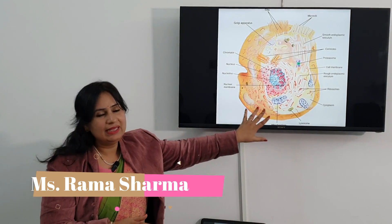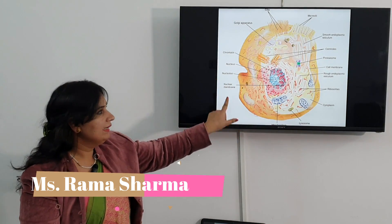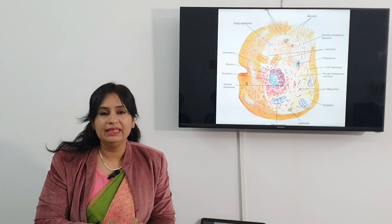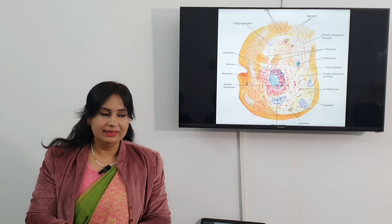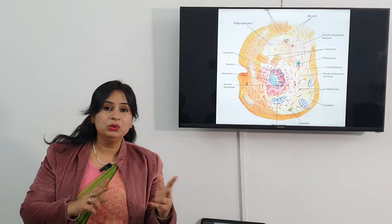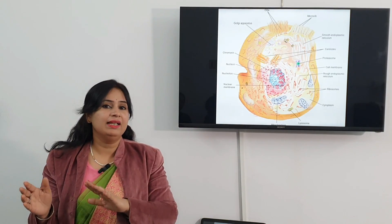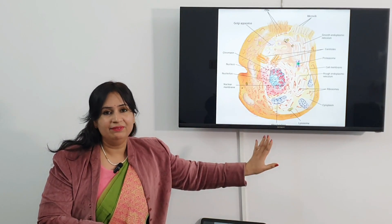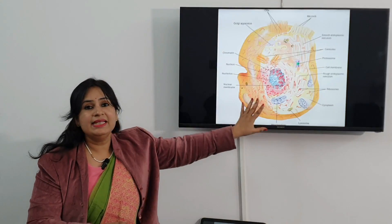This is a typical animal cell. The membrane surrounding the cell is known as cell membrane or plasma membrane. In plant cell, as already discussed, there are two coverings or two layers — one is cell wall and another one is cell membrane. But here there is only a single membrane which covers the cell.